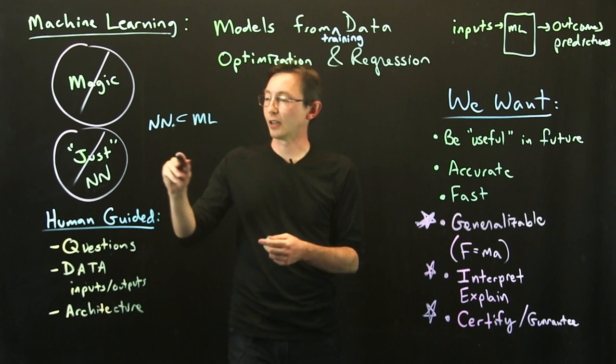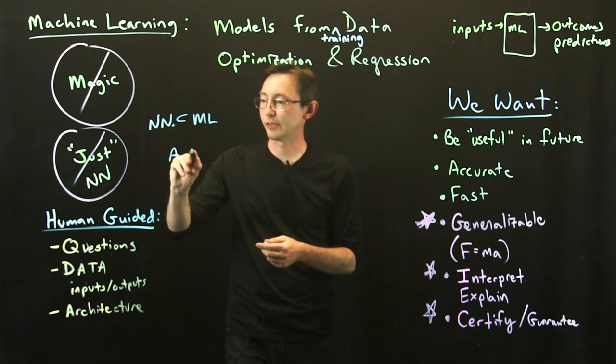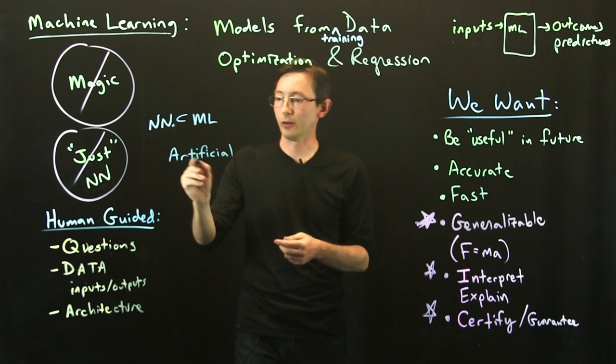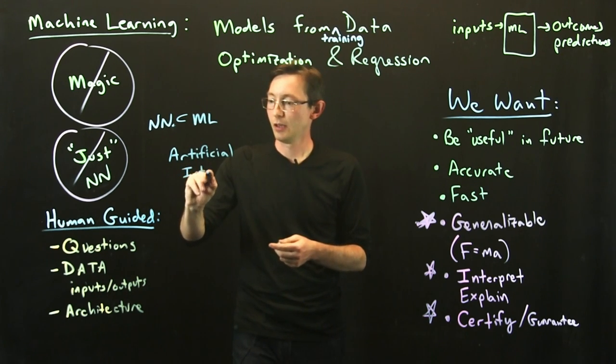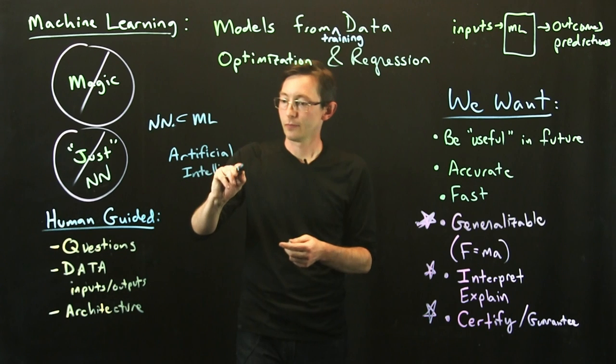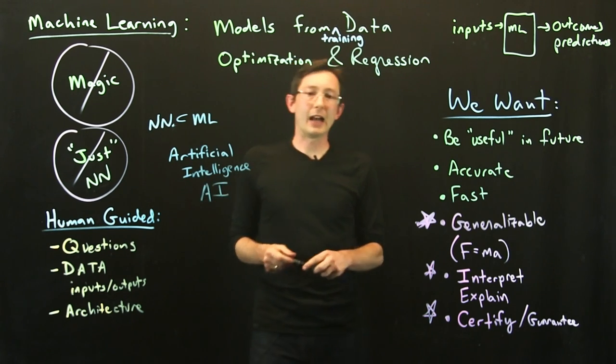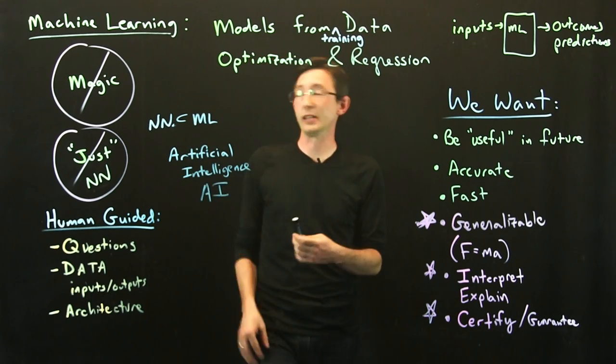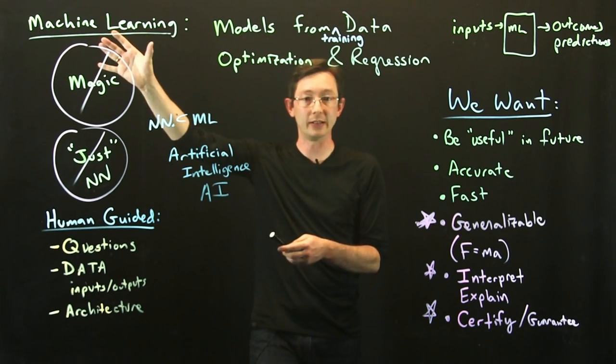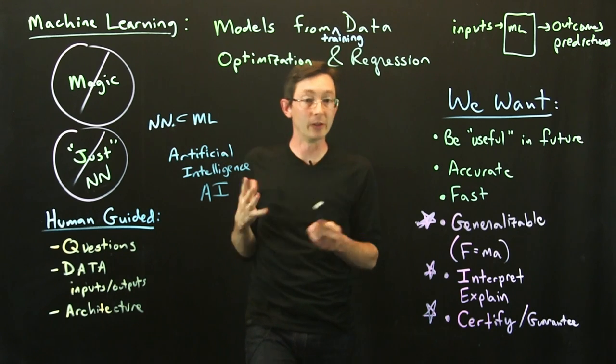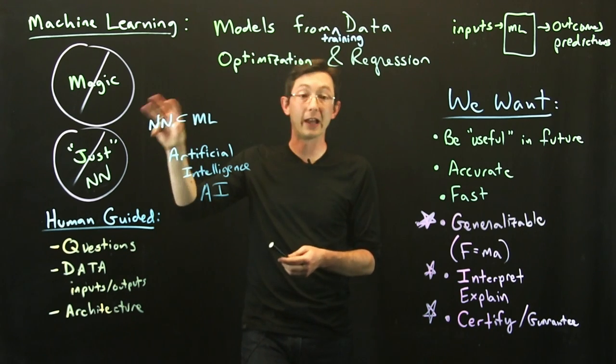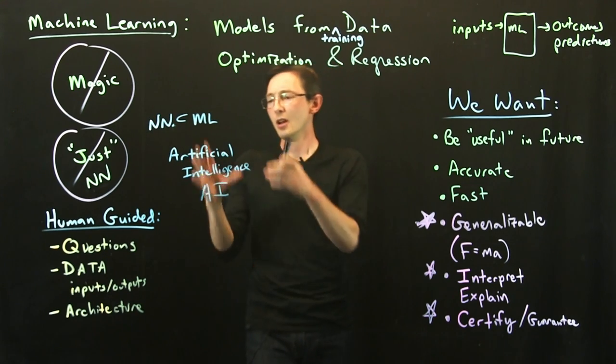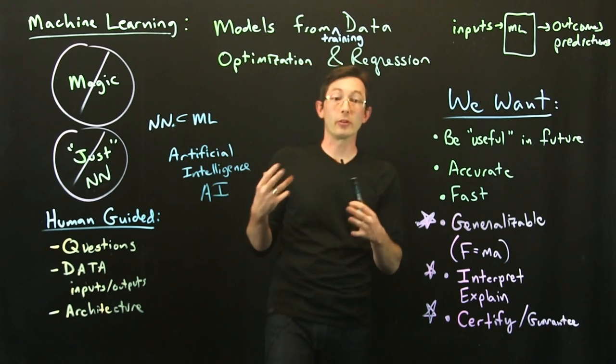The other thing I want to talk about is artificial intelligence. So you'll hear this all the time now, artificial intelligence, AI. And I think this is very fuzzy, kind of murky. Machine learning is pretty well defined nowadays. Neural networks, I'll give you a few lectures on what they are. Artificial intelligence is a little bit more nebulous.